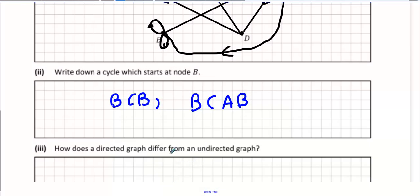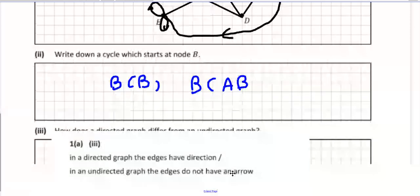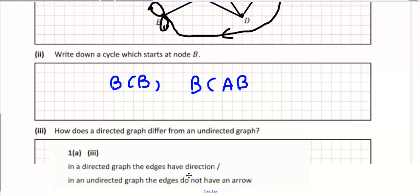Now, how does a directed graph differ from an undirected graph? In a directed graph, the edges have direction. And in an undirected graph, the edges do not have direction.